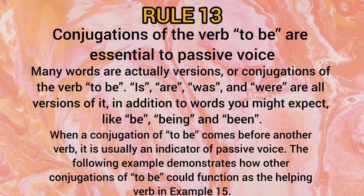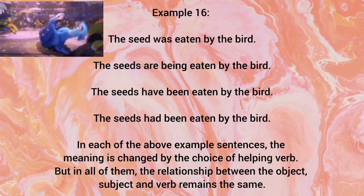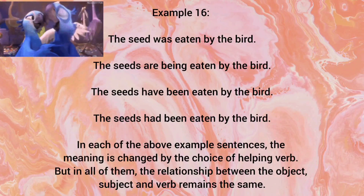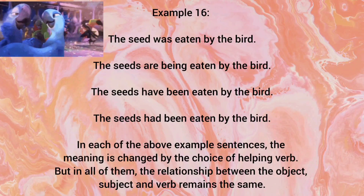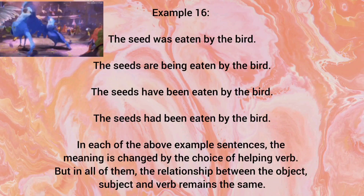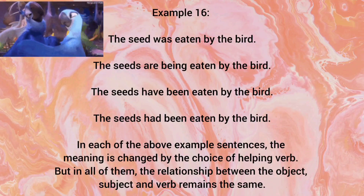Rule number 13: Conjugations of the verb 'to be' are essential to passive voice. Many words are versions of the verb 'to be' — like 'is,' 'are,' 'was,' 'were,' and also 'be,' 'being,' and 'been.' These are all used in passive voice. For example: 'The seed was eaten by the bird,' 'The seeds are being eaten by the bird,' 'The seeds have been eaten by the bird,' and 'The seeds had been eaten by the bird.' In these sentences, the helping verb changes, but the relationship between object, subject, and verb remains the same.